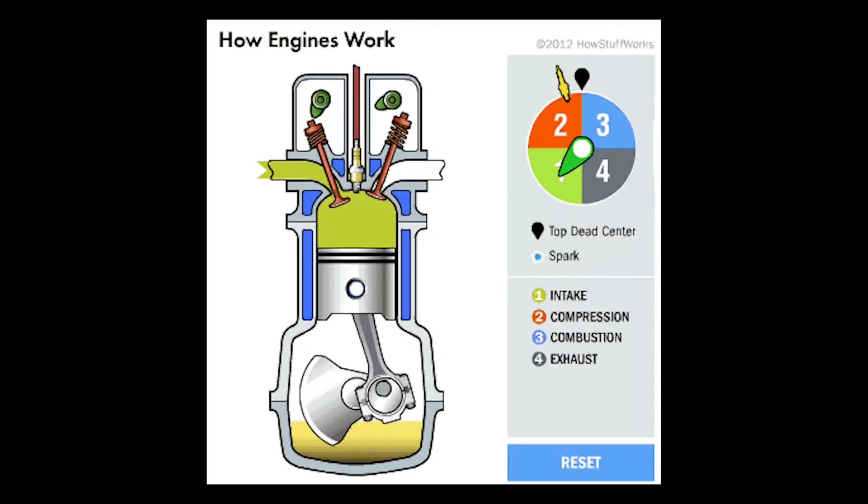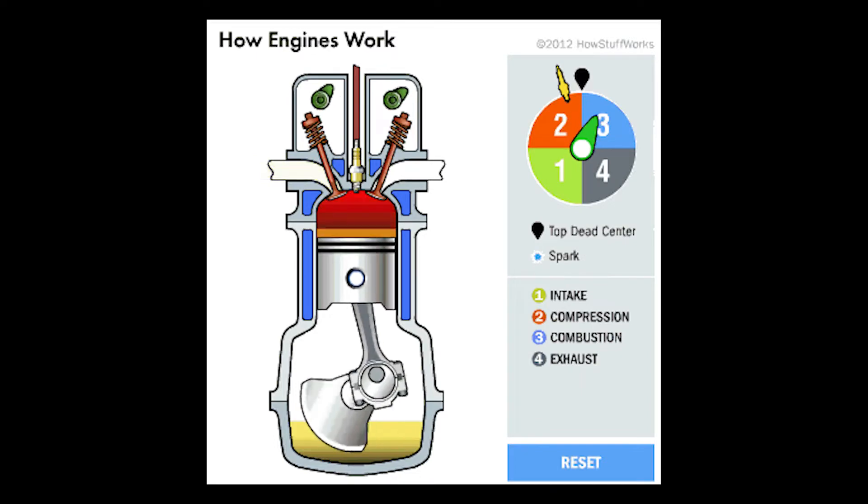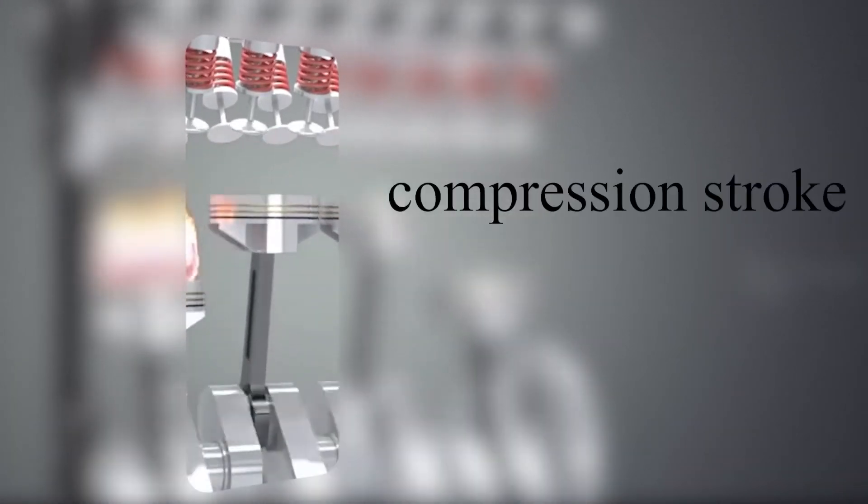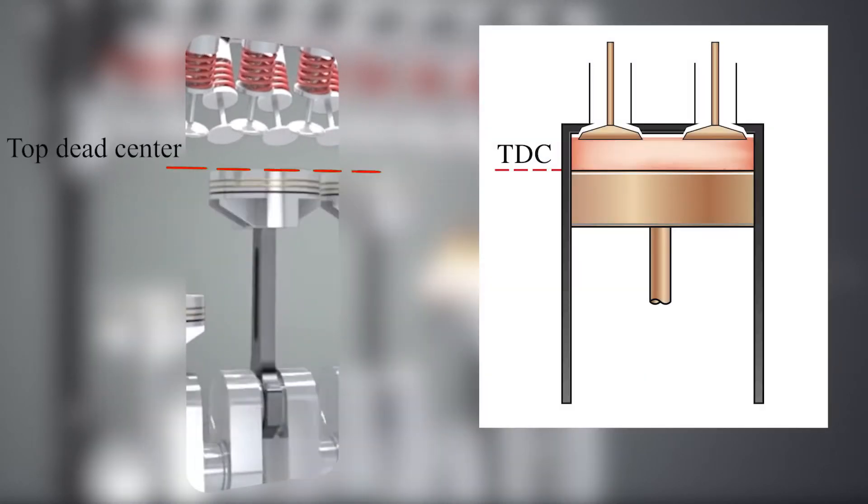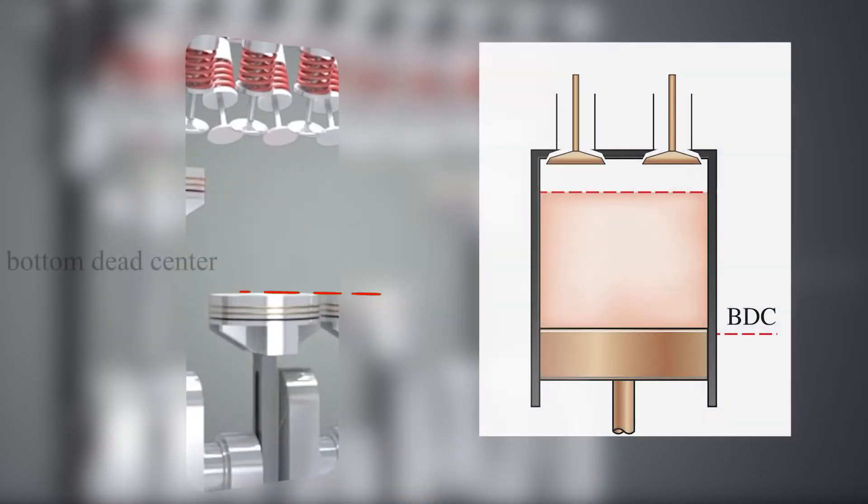The real spark ignition engine includes four thermodynamic processes. The first process is known as the compression stroke, in which the piston moves upward up to the top dead center, compressing the air-fuel mixture. Afterwards, the spark plug ignites and the fuel mixture is combusted, forcing the piston down which also makes the crankshaft rotate.